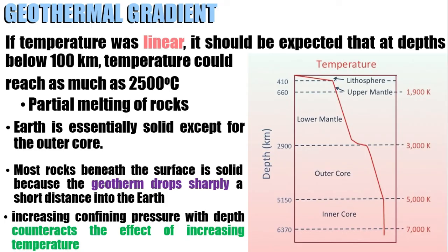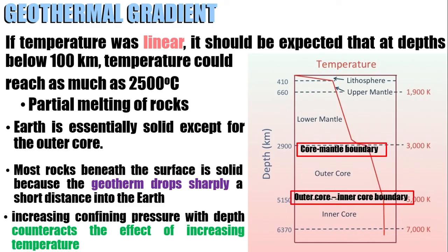Based on the geotherm curve, it can be deduced that the mantle is considerably hotter than the crust, and the core is much hotter than the mantle. You can see this is the core-mantle boundary, this is the outer core-inner core boundary, and this is the earth's center.